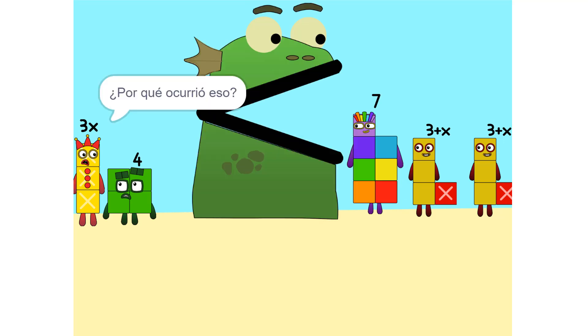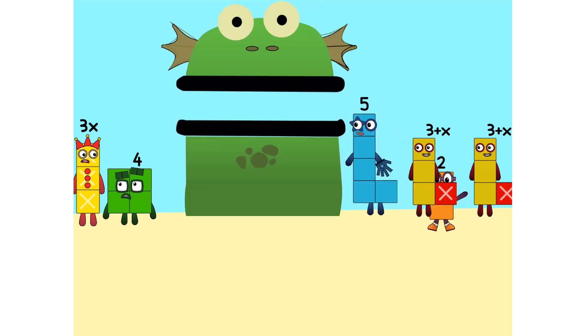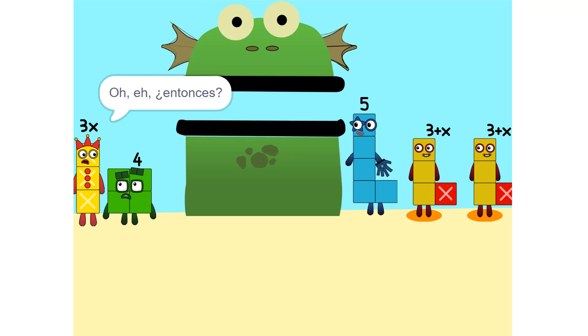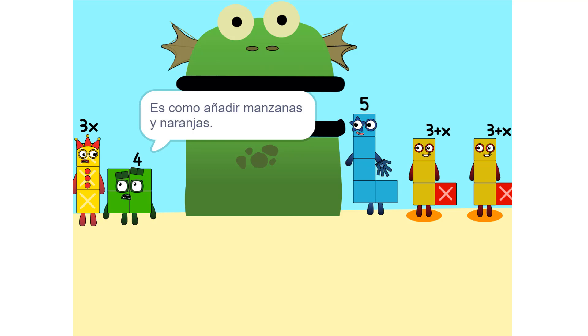¿Por qué ocurrió eso? El 2 está conectado al 3 más X. Oh, entonces es como añadir manzanas y naranjas. No puedes.